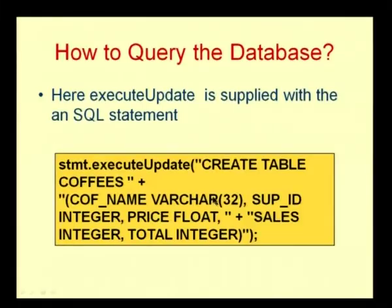There are two types of tables: tables created by the user and tables created by the system. When a table is created, the system table is updated and the user table is also created. One entry will appear in the system table called user_tables, and there will be updates in tables like user_constraints. The new table is empty, and we can keep inserting values and performing all manipulations on it.